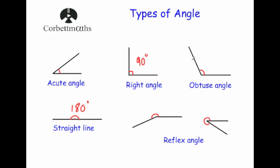Next we've got an obtuse angle. An obtuse angle is bigger than 90 but less than 180 degrees. Then we've got a straight line, which is 180 degrees.